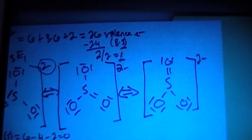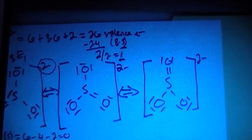And now we can go ahead and look at the shape, polarity, stuff like that. So we have, this is an AX3E1.